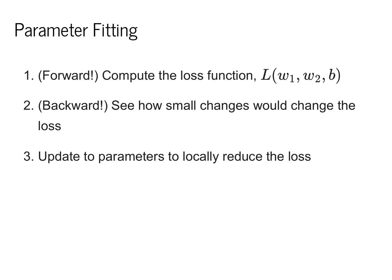The second is to check how small changes would impact the loss. We do this by using backward. In particular, we forward the loss function, then we backward to get the derivative with respect to the parameters. Once we've done this, we update the parameters to reduce the loss, giving us the pictures in the previous slide.